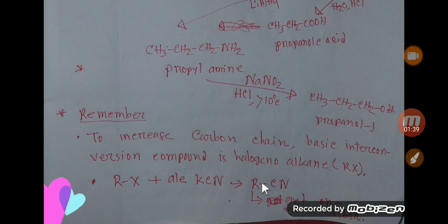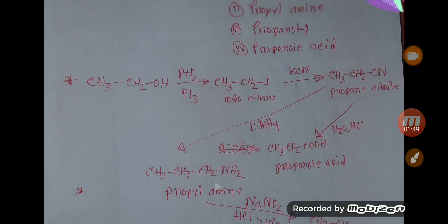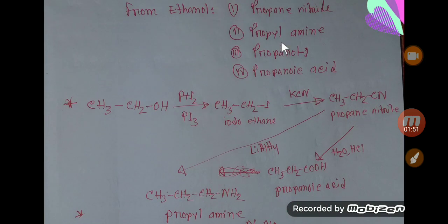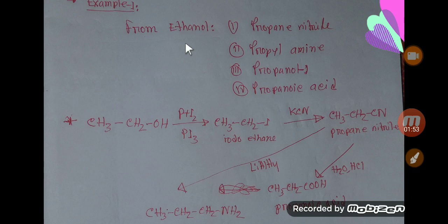By this way we can increase the number of carbons in the chain. Everything will be clear to you if you study this example. At first, we'd like to convert ethanol to propanenitrile, propyl amine, propanol, and propanoic acid.